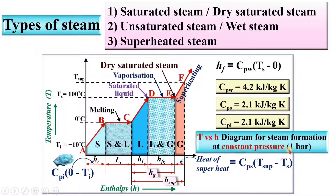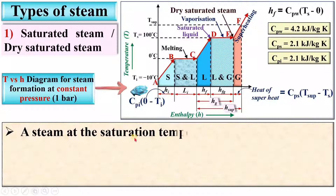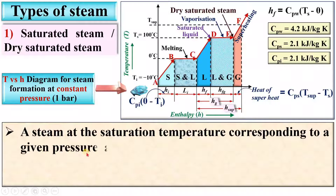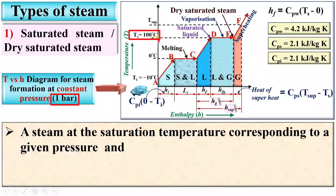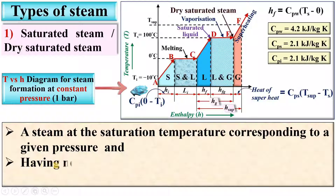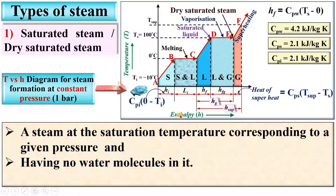I have taken the constant pressure as one bar. So let us see the first one: saturated steam. Saturated steam is a steam at the saturation temperature corresponding to a given pressure. Here at one bar pressure, the saturation temperature is 100 degrees Celsius. Saturated steam means the steam having saturation temperature and having no water molecules in it.